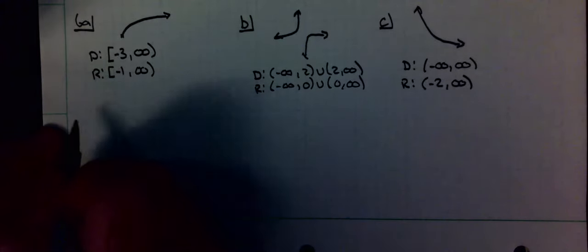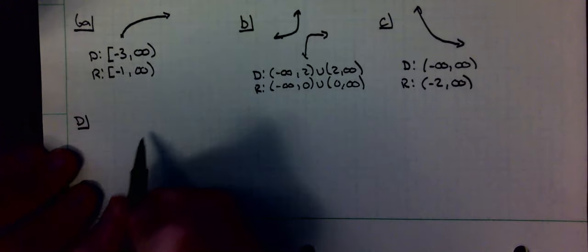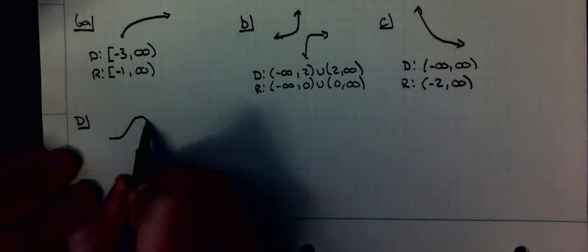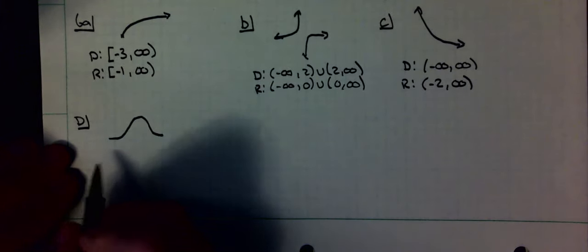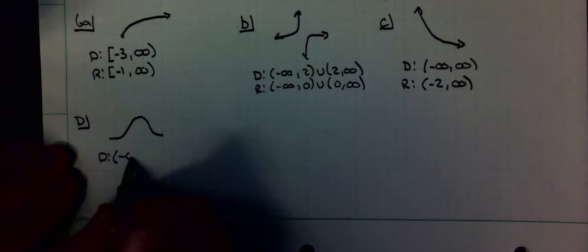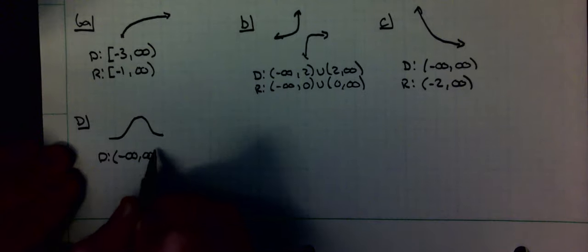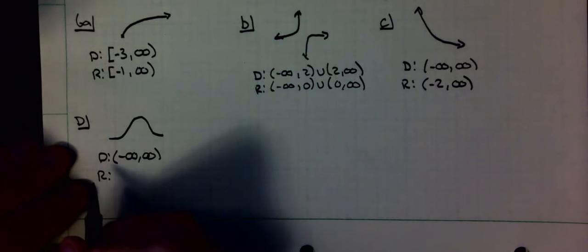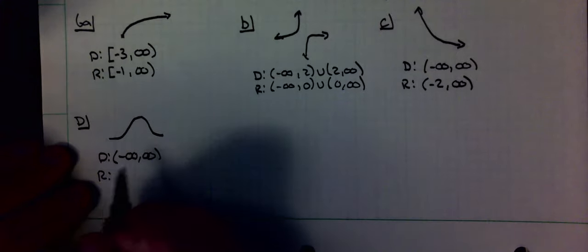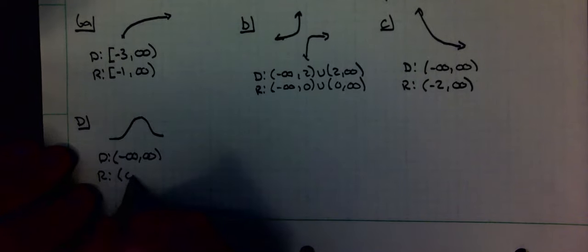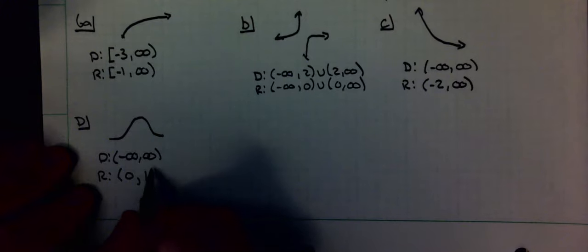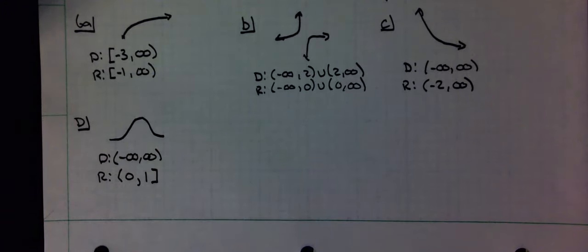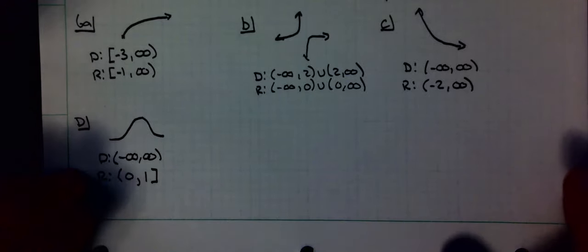The next one, D, looks something like this. The domain is all real numbers, negative infinity to infinity. Range: it doesn't look like it gets all the way down to zero, so I'm going to put a round bracket at zero, and it goes up to one. So that is how I would write it. Again, you're just looking at it. Where are the x's? Where are the y's?